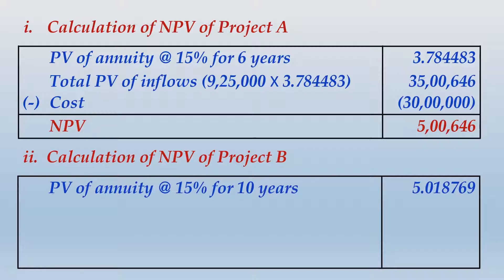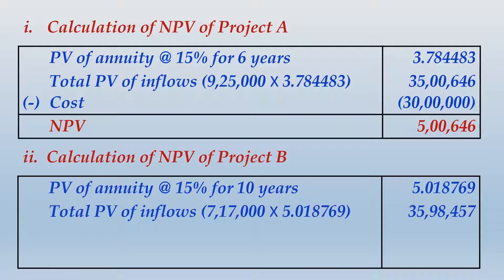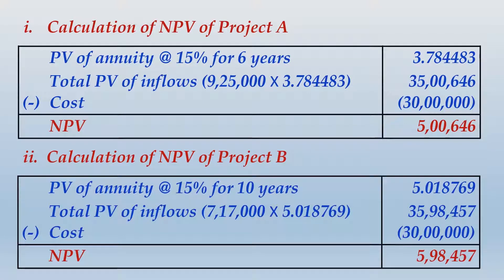For project B, the present value of annuity at 15 percent per annum for 10 years gives a factor of 5.018769. Total PV of inflows will be 7,17,000 multiplied by this annuity factor, which comes to 35,98,457. From that, when you subtract the cost, the NPV of project B is 5,98,457.